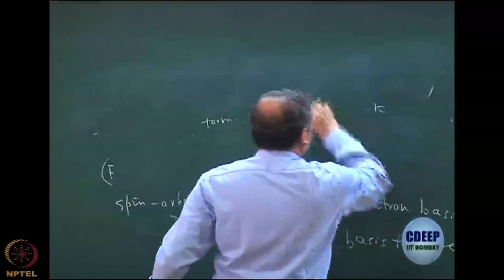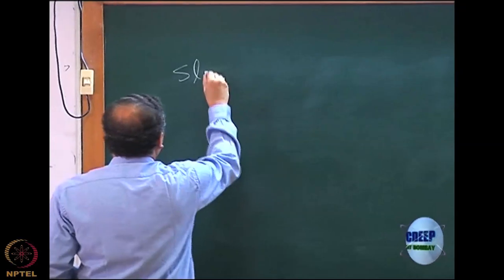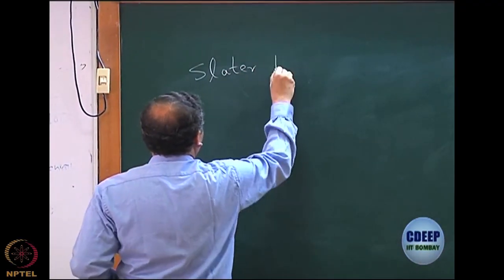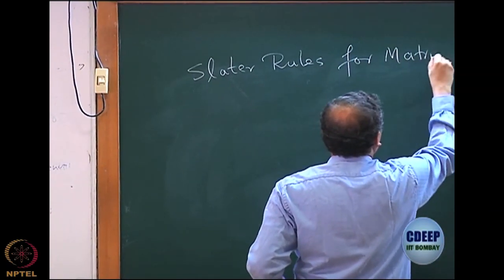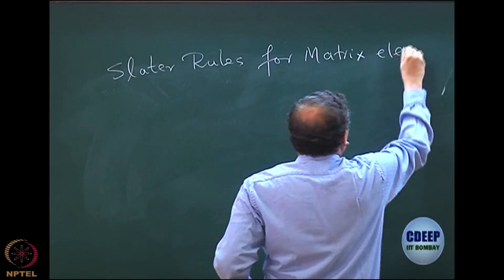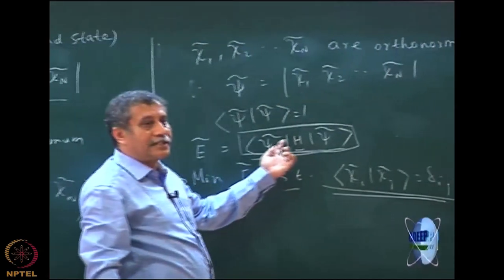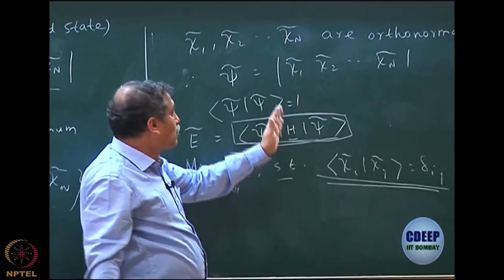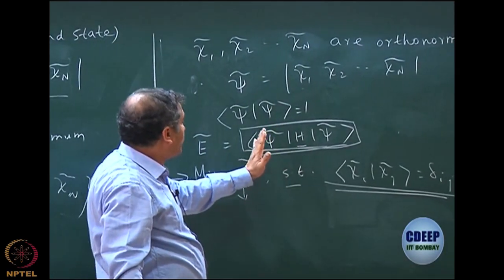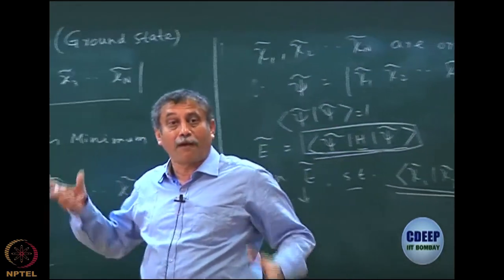Let me write down what the problem is. To do this, there are certain rules. These rules were derived by John C. Slater and they are usually known as Slater rules — Slater rules for matrix elements. These rules are required even when doing CI, because when doing CI, I have to calculate matrix elements of the Hamiltonian in terms of the determinants d_i and d_j. So I must know how to write the matrix element of the Hamiltonian between two determinants in terms of the spin orbitals which form the determinants.